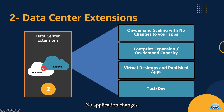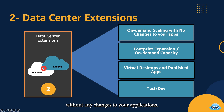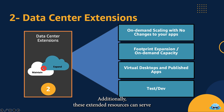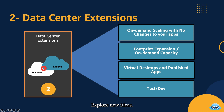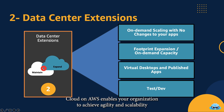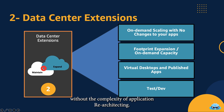No Application Changes — what's remarkable is that you achieve this without any changes to your applications. They continue to run as they always have, seamlessly utilizing extended cloud resources. Versatile Test and Development — additionally, these extended resources can serve as an ideal playground for testing and development environments. Explore new ideas, innovate, and iterate in a flexible and cost-effective way. In essence, VMware Cloud on AWS enables your organization to achieve agility and scalability without the complexity of application re-architecting.